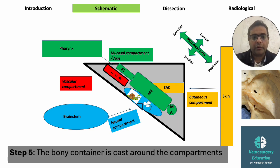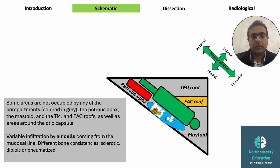The petrous pyramid is surrounded by cortical bone. This bone also surrounds certain structures, forming bony canals around them — such as the external auditory canal, internal auditory canal, carotid canal, and the fallopian canal for the facial nerve. There are some areas not occupied by any of the compartments, including the petrous apex anteriorly, the mastoid posteriorly, the roof of the external auditory canal, and the roof of the temporomandibular joint. These bony parts can be cortical bone, spongy bone, or they can be replaced by air cells coming from the mucosal compartment.